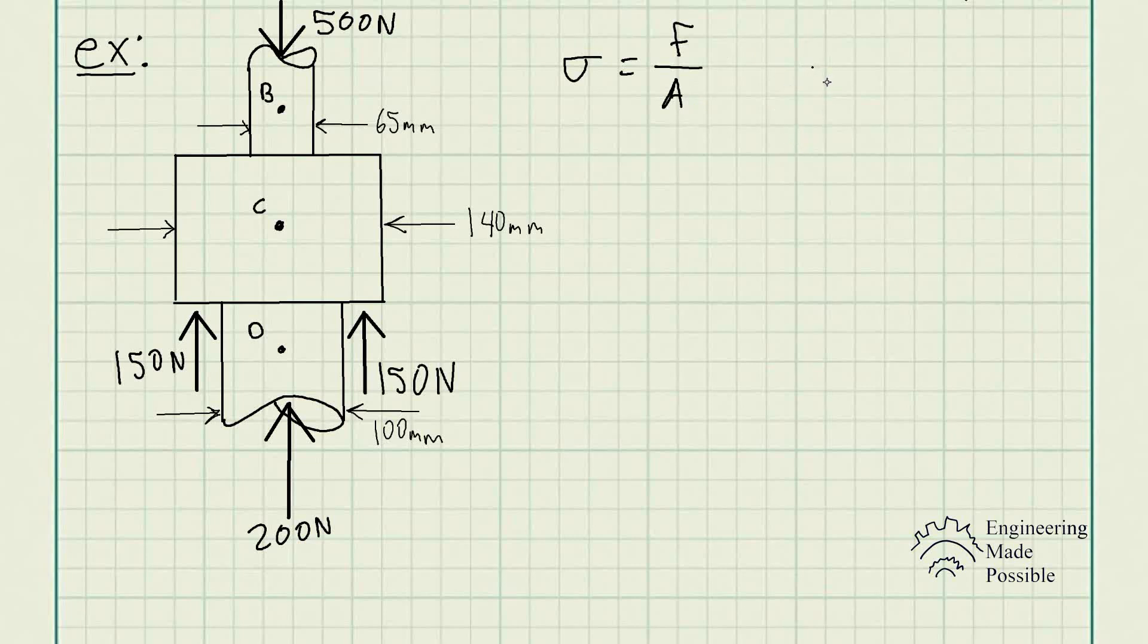First off, the good habit is to first solve for the cross sectional areas at each of the points. Obviously, the stress is going to be different at these different sections since the diameter is in fact different. We have the external loads 500 newtons here, and the bottom we have 200 newtons as well as the 150 and 150 newtons. We have the respective diameters of each of the cylinders shown, 65 millimeters, 140, and 100.